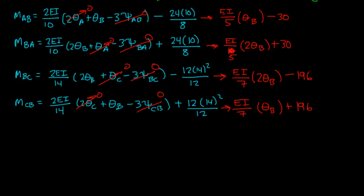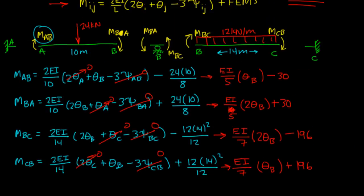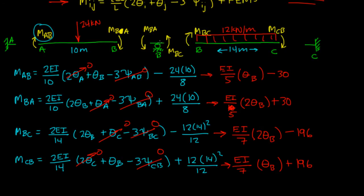Now we're going to use these equations to figure out what's going on at joint B. Now if you remember at joint B, you have MBA and you have MBC.